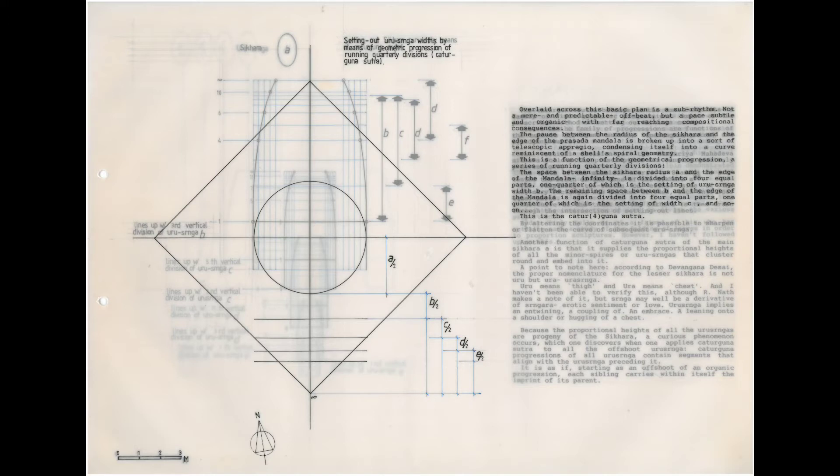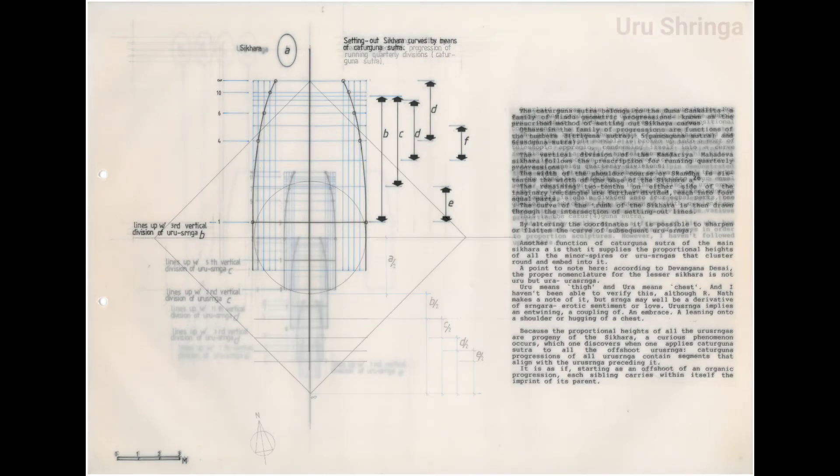You mark out a quarter of the plan, then a quarter of what's left, then a quarter of what's left out of that, and a quarter of what's left out of that, and so on. This gives you the proportions for the main sikara and lesser sikaras, or uru shringra. The curved form of the main sikara and uru shringra are marked out in the same way: a quarter of the height, then a quarter of what's left, and so on. Joining the marks forms a curve.